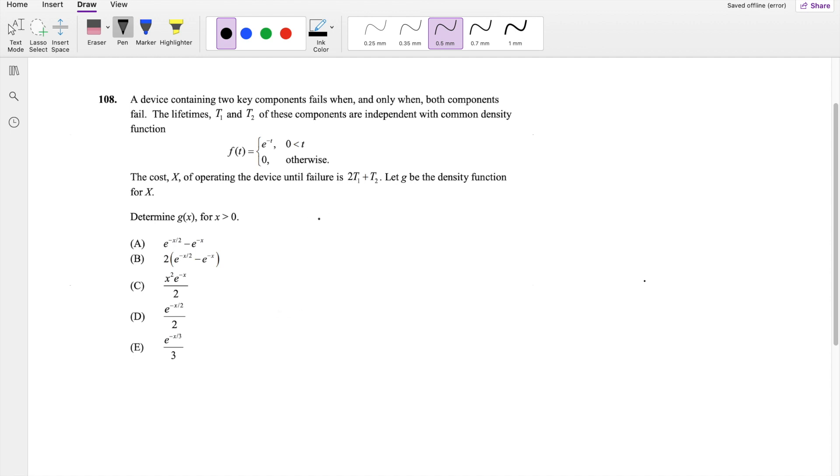So this question is asking, x, which is the cost, is equal to 2 times t1 plus t2. When we're asked to find the density function of x, we always know that it's easier for us to find G of x for a transformation because G of x is equal to the probability that big X is less than little x, where x we know is given by this thing here. So this is equal to probability of 2t1 plus t2 is less than x, which is t2 is less than x minus 2t1.